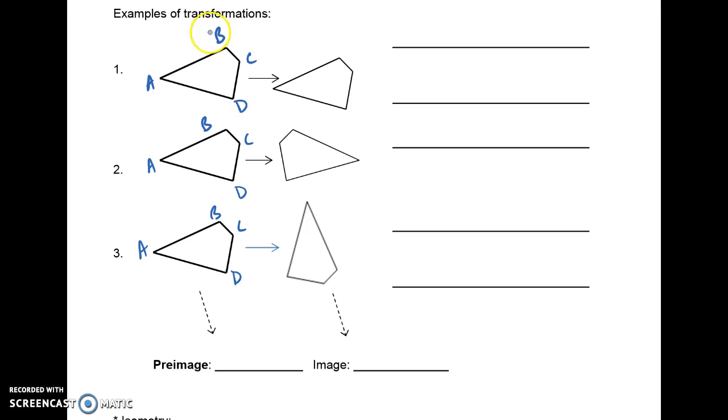And then we want to see what happened to ABCD. So if you take a look at the first image, this first pair of pictures, what happened? Well, what I'm seeing is it just slid over. It slid to the right and then went down a little bit. And that is what's called a translation. And that's going to be the focus of our notes in class.